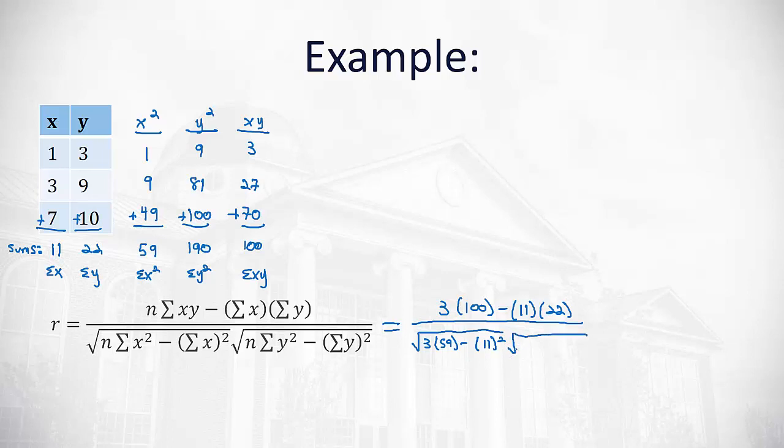Times the square root of the sample size 3. Times the sum of the y squareds, 190. Minus the sum of the y's, which was 22.